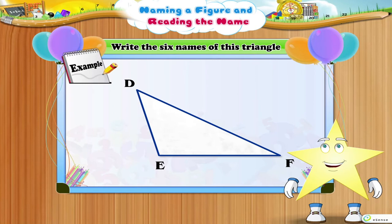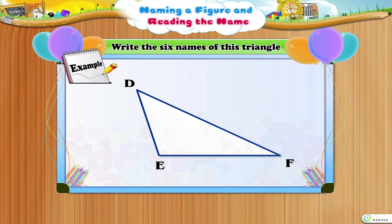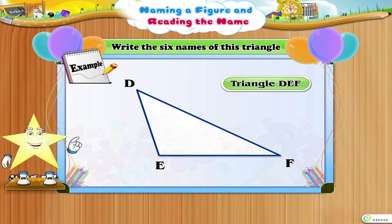Write the six names of this triangle. The six names of this triangle are: Triangle D, E, F.